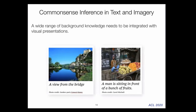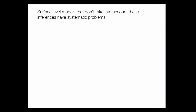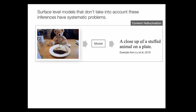I'll give you two examples. On the left, 'a view from the bridge' — when you look at this caption, we don't expect to see the bridge itself because we rely on background knowledge that when you're standing on the bridge you don't see it. The space perfectly shows this as the right caption for the image. On the right, 'a man is sitting in front of a bunch of fruits' is just the most immediate explanation of the image — the image carries more information load than the text. Surface-level models that fail to account for these different inferences suffer from systematic problems.